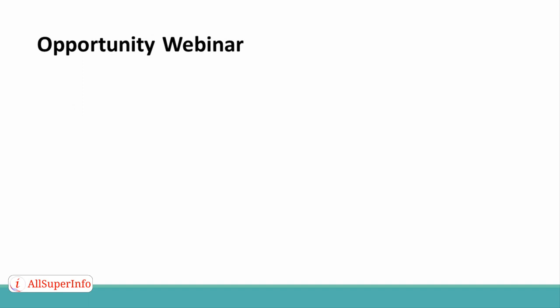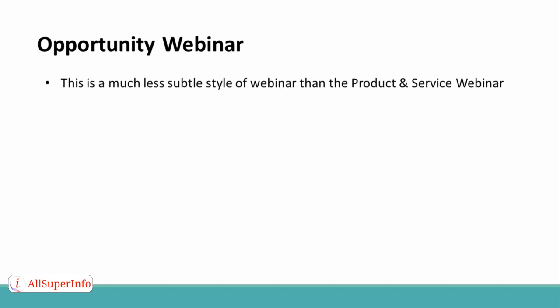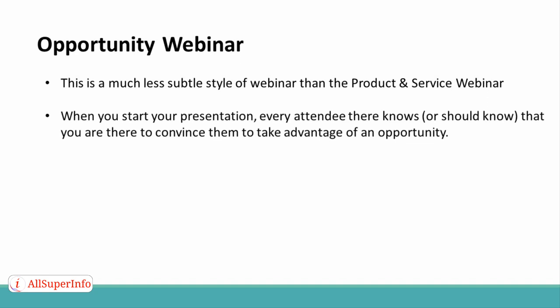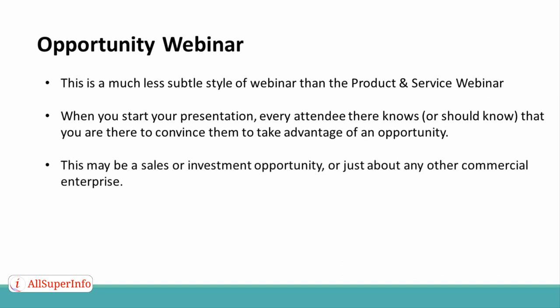Finally, the third type of webinar is the opportunity webinar. This is a much less subtle style of webinar than the product and service webinar, because when you start your presentation, every attendee there knows, or should know, that you are there to convince them to take advantage of an opportunity. This may be a sales or investment opportunity, or just about any other commercial enterprise.